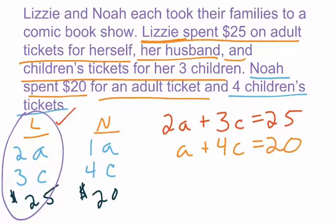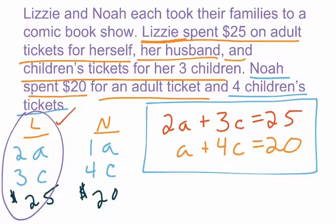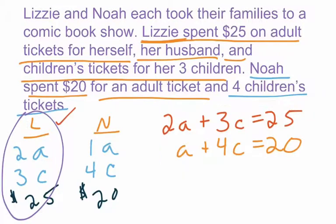So basically that's the system right there — that is the system of equations we can write from the word problem. We can solve it. Some prompts will just say to write the system — and there it is, we're good to go. Now let's say we need to actually solve and figure out the value for A and C — how much is an adult ticket, how much is a children's ticket.